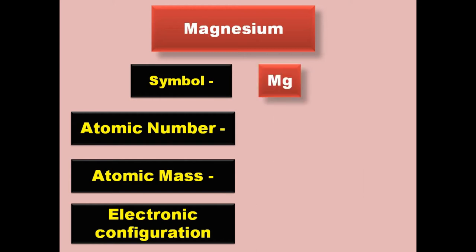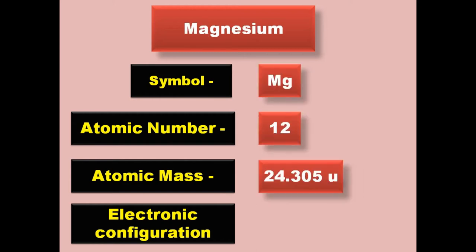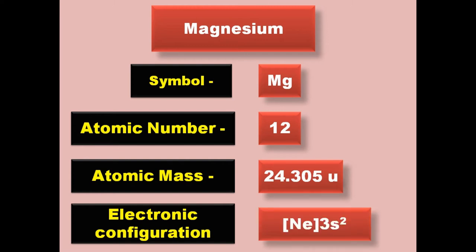Magnesium has symbol Mg, atomic number 12, atomic mass 24.305, electronic configuration [Ne] 3s2. Magnesium is an alkaline metal and exists in solid form at room temperature.